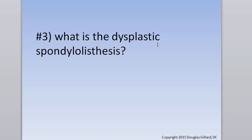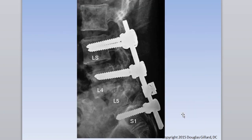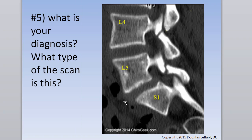Know what a dysplastic spondylolisthesis is. These are the big ones — a malformation or complete absence of the L5-S1 facet joints allowing a massive slip. This almost always represents a dysplastic spondylolisthesis, and the extreme form is called spondyloptosis. The fix is lumbar interbody fusion.